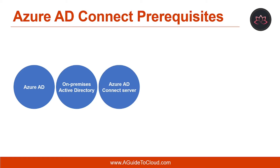Another prerequisite is the Azure AD Connect Server. The Azure AD Connect Server contains critical identity data, so it is important that administrative access to this server is properly secured. The Azure AD Connect Server must be treated as a tier-0 component.